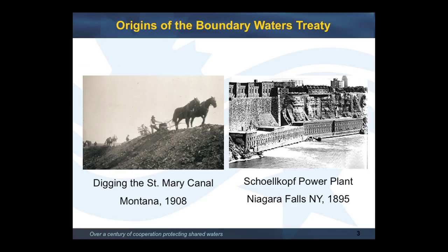We were created by the treaty. The purpose of the treaty was to prevent and resolve disputes over the use of water shared by Canada and the United States and to settle transboundary issues — it's primarily a dispute settlement mechanism. At the time, in 1909, disputes were over competing canals taking water out of the St. Mary and Milk River in Montana and Alberta, and on the Niagara River there was conflict between transportation interests and those who wanted to build hydroelectric power dams. So the treaty was created as a framework to deal with those disputes.